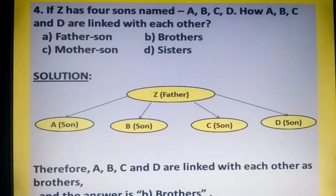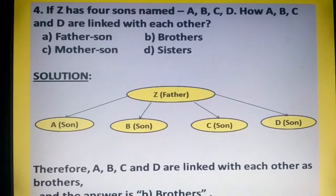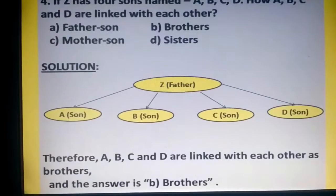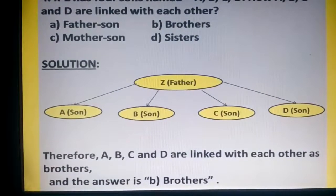If Z has four sons named A, B, C and D, how are A, B, C and D linked with each other? So A, B, C, D are all sons of Z. What are they linked to each other as? Brothers. It's very simple. Therefore, A, B, C and D are linked with each other as brothers, and the answer is B, brothers.